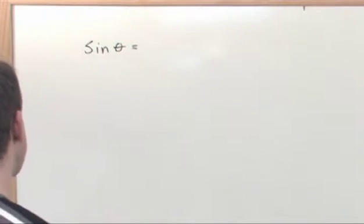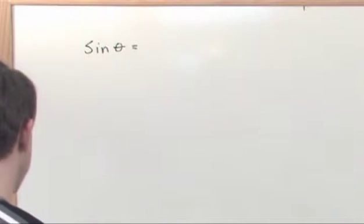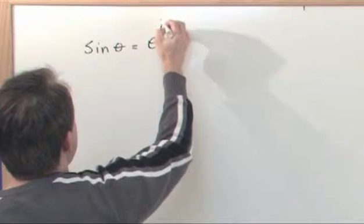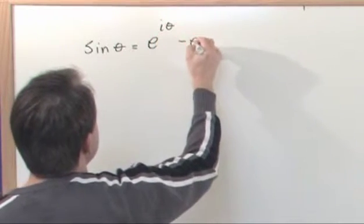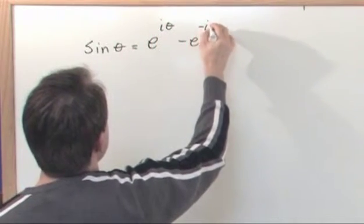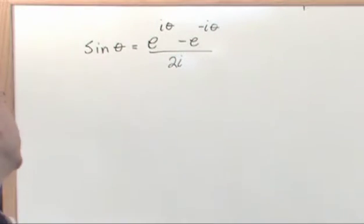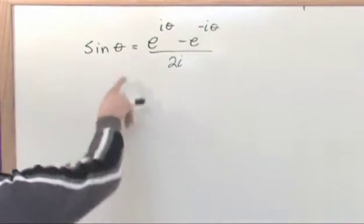But it turns out when you study more advanced math, the sine of an angle is written like this: it's written as e to the i theta minus e to the minus i theta over 2i. This thing right here is the true form of the sine function.